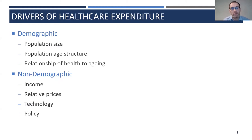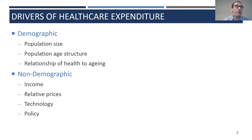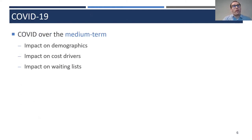Non-demographic drivers are pretty much everything else: income, since as countries become richer they tend to demand more health-related goods and services; relative prices, as there is a lot of evidence that healthcare prices tend to outstrip price growth for other goods and services; technology, which is an important driver of healthcare expenditure; and policy — how a country finances its healthcare system and different models of care delivery — which will drive variation in healthcare expenditure.